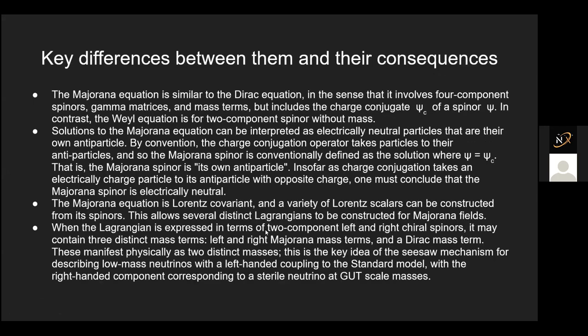When the Lagrangian is expressed in terms of two-component left and right chiral spinors, it may contain three distinct mass terms. The first is the normal Dirac mass term — what the standard model predicts. The Dirac mass for a lepton, like an electron neutrino, would be similar to that of an electron itself. That's the major problem with the standard model: it can't even tell why the neutrinos are so low mass. This is the key for the idea of the seesaw mechanism.